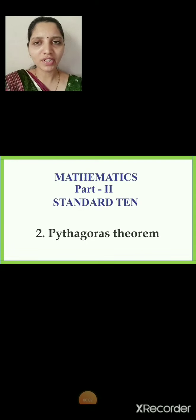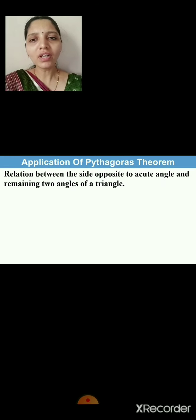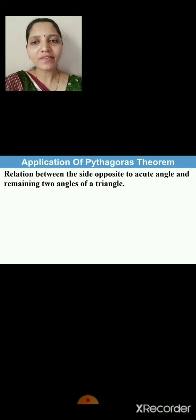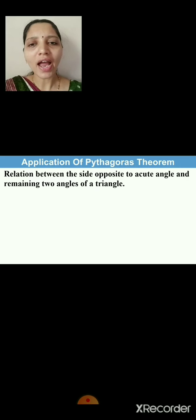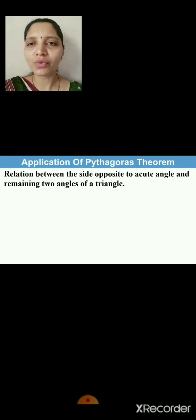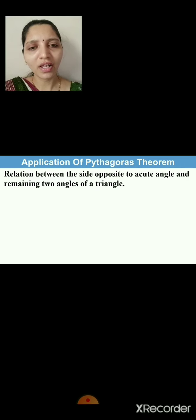Hello students, welcome back to the online geometry session. We are doing the second lesson on Pythagoras theorem. In the previous session we learned the application of Pythagoras theorem, where we saw the relation between the side opposite to an acute angle and the remaining two sides of a triangle, and also the relation between the side opposite to an obtuse angle and the remaining two sides.